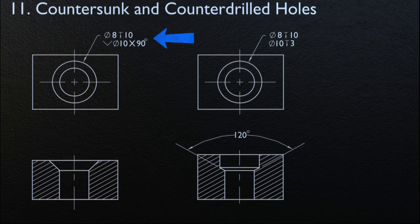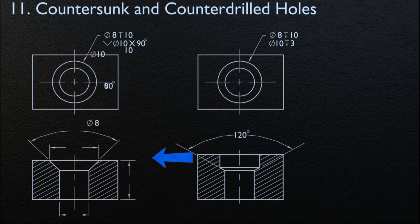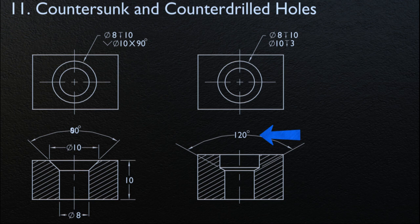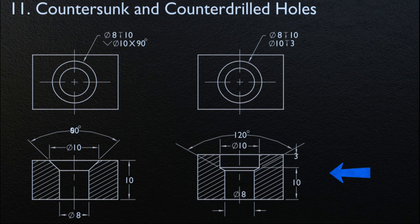Next, we are going to discuss countersunk and counter drilled holes. For countersunk holes, the diameter and included angle of the countersink is specified. For counter drilled holes, the diameter and depth of the counter drill are specified. Specifying the included angle of the counter drill is optional. The depth dimension is the depth of the full diameter of the counter drill from the outer surface of the part. Placing these dimensions in the section view gives a better illustration of the displayed features.